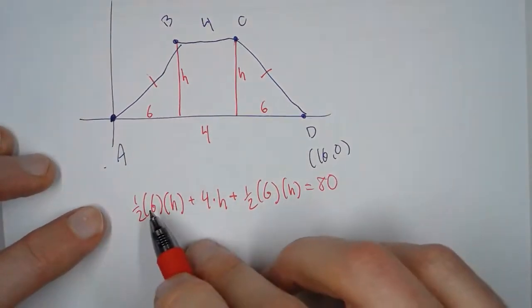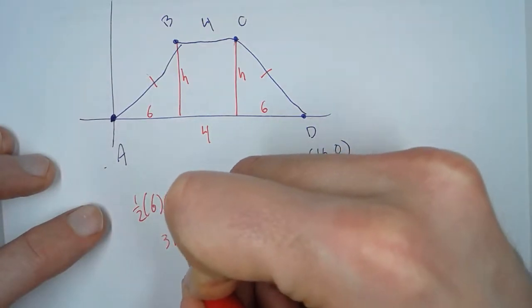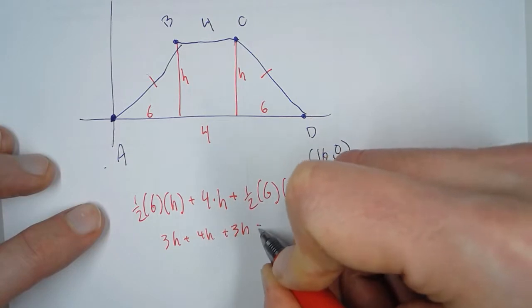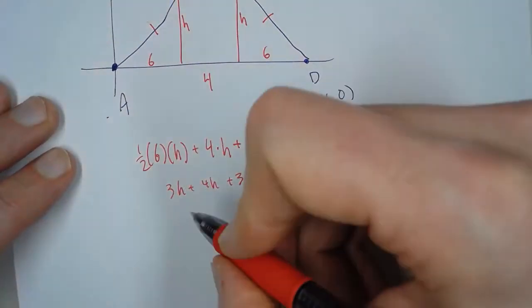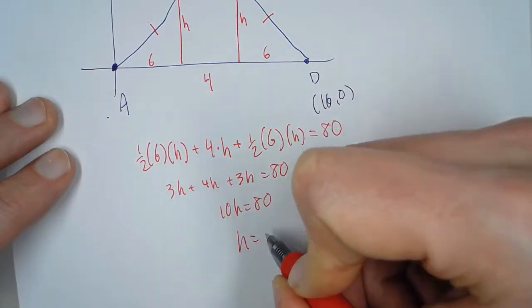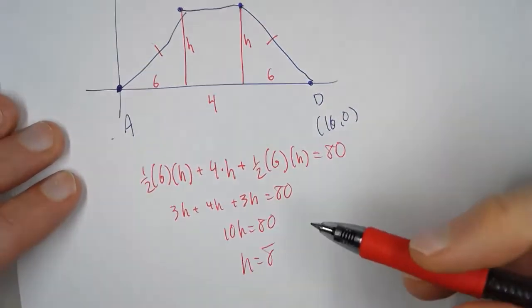So if we simplify this, 1/2 times 6 is 3H plus 4H plus 3H equals 80. Combine all of these, so 10H equals 80. So H equals 8. That is our height.